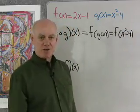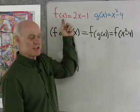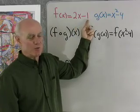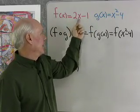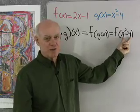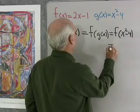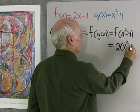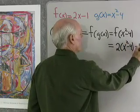So what's f of x squared minus 4? Well, f does the same thing to anything that's inside the parentheses. It multiplies it by 2, and then it subtracts 1. So, if it does that to x, it's going to do the same thing to x squared minus 4. I'm going to write this as 2 times x squared minus 4 minus 1.